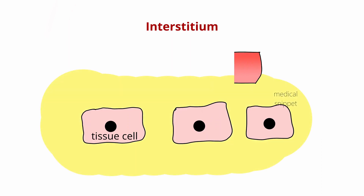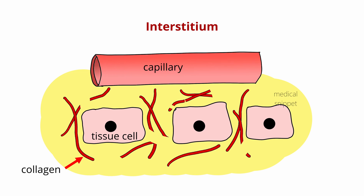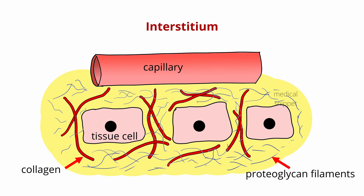Interstitium is made of solid and fluid parts. The solid part is formed by collagen fiber bundles and proteoglycan filaments. Collagen bundles give the interstitium tensional strength. The fluid in these solid spaces is called interstitial fluid. The interstitial fluid is derived from the blood capillaries by diffusion and filtration. So the interstitial fluid is similar to plasma, but contains less protein, as capillaries don't allow proteins to escape easily from the circulation.